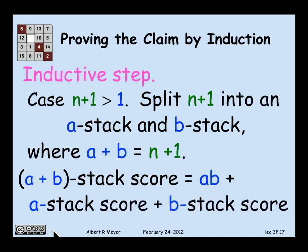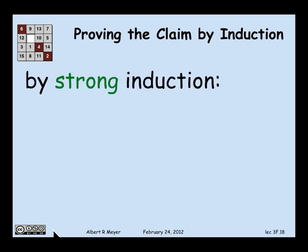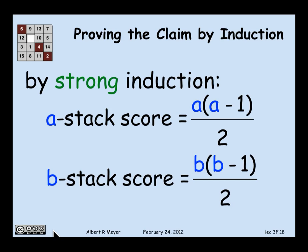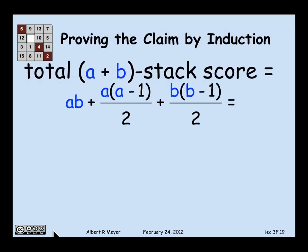And what's my score going to be then? Well, my score on that move that I make, where I split into the a-stack and the b-stack, is ab. And the rest of the game consists of playing as well as I can on the a-stack and as well as I can on the b-stack. But a and b are smaller than n+1. They're less than or equal to n, which means that by strong induction, I know that no matter how I play on the a-stack, I'm going to wind up with this score, a(a-1)/2. No matter how I play on the b-stack, I'm going to wind up with b(b-1)/2. So that means that my score on the a+b stack is going to be this formula, ab + a(a-1)/2 + b(b-1)/2.